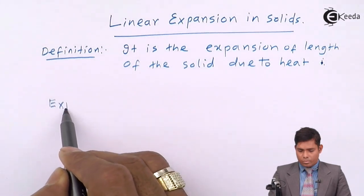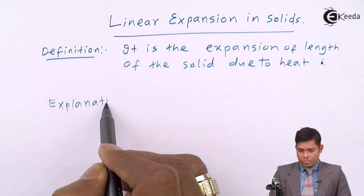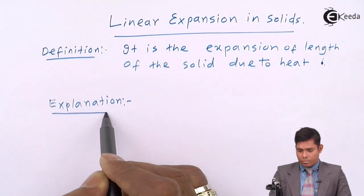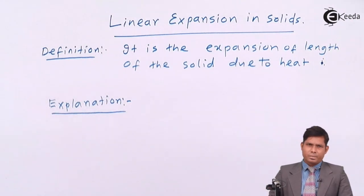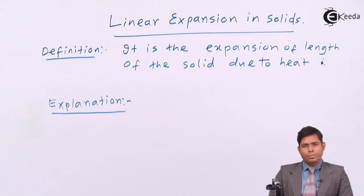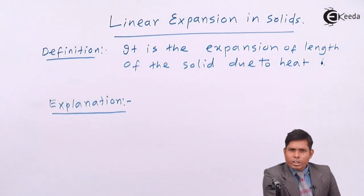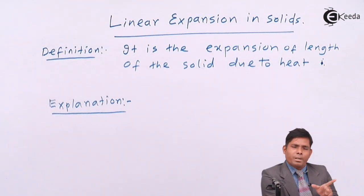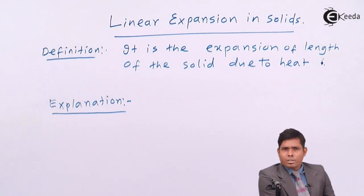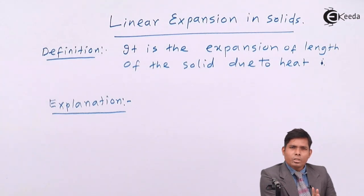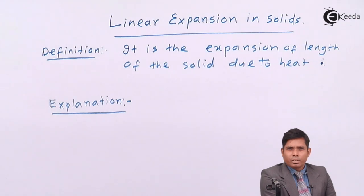We will explain about linear expansion and derive the final length of a rod when heated from one temperature to another. When heated, the rod will expand, so its initial or original length will change. We will find what the final length will be corresponding to that new temperature.